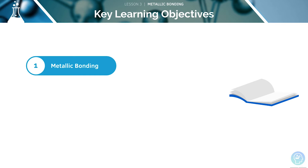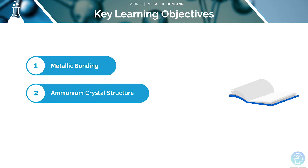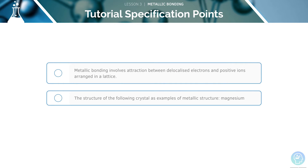Here are the key learning objectives for this lesson. We'll first look at metallic bonding, and then we will cover ammonium crystal structure. Pause the video now to have a read through them before we begin.